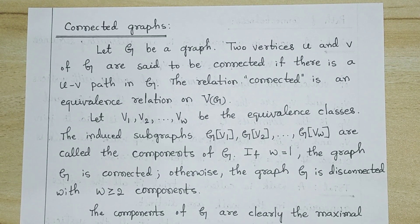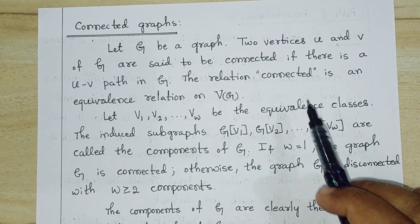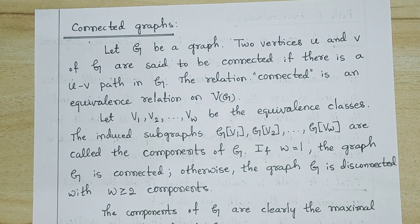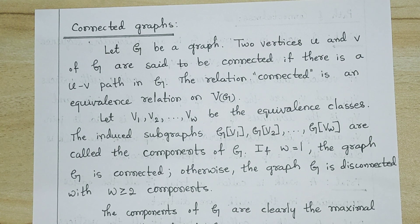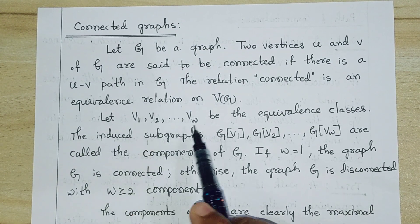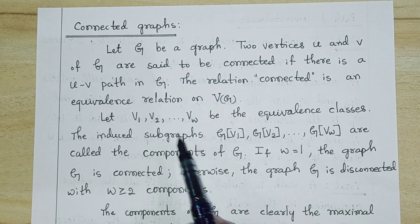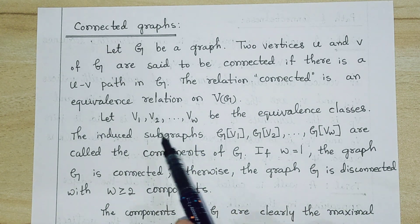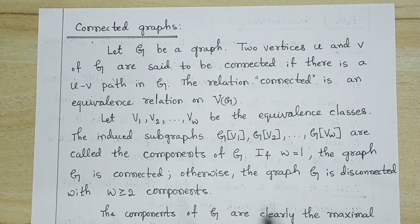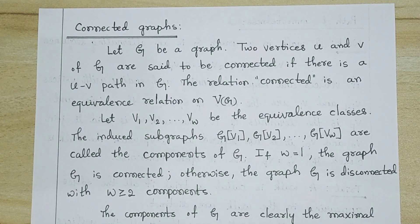The relation of connectedness on the vertex set V is an equivalence relation — it is reflexive, symmetric, and transitive. Since we have an equivalence relation, we can divide the vertex set into equivalence classes V1, V2, ..., Vk. The induced subgraphs of these equivalence classes are known as the components of G. If the number of components is one, the graph is connected; otherwise it is not connected.